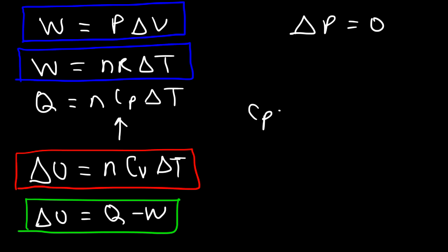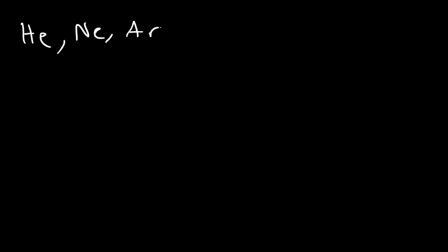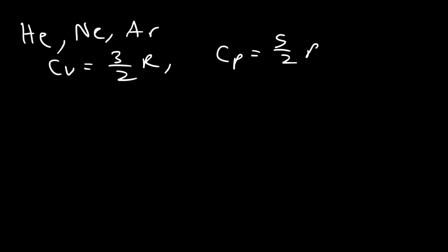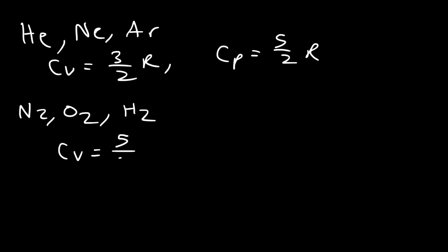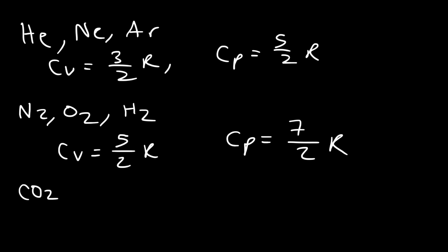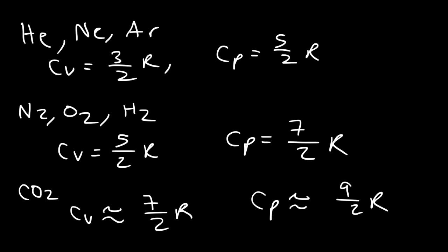Remember, Cp always equals Cv + R. For monatomic gases (helium, neon, argon): Cv = (3/2)R and Cp = (5/2)R. For diatomic gases (N₂, O₂, H₂): Cv = (5/2)R and Cp = (7/2)R. For molecules with 3 atoms: Cv ≈ (7/2)R and Cp ≈ (9/2)R. These are the key formulas for isobaric processes.